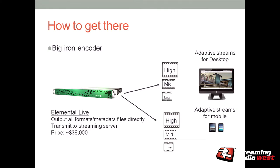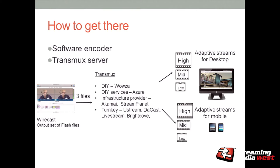Five years ago, you had to buy a $36,000 encoder that produced all the streams necessary at the point of origin and sent those out to the streaming server. That was your only option. It still is an option — something you may want to do if you're a broadcaster or in certain circumstances. But there are a couple of other options that you have.